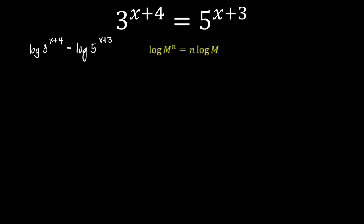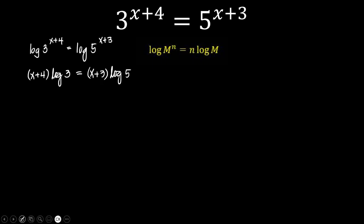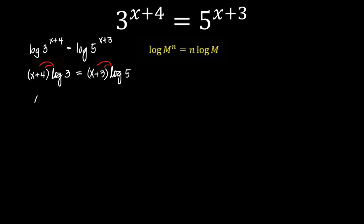So what happens is we bring down the exponents to the front. So that becomes x plus 4 times logarithm of 3 is equal to x plus 3 times logarithm of 5. And then we distribute the logarithm to the terms in front, giving us x·log3 + 4·log3 = x·log5 + 3·log5.